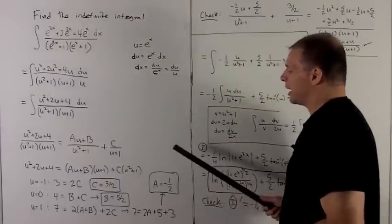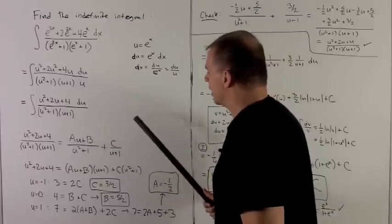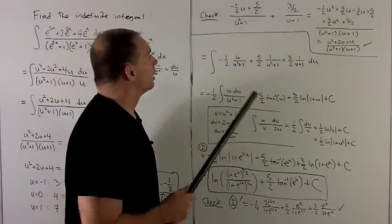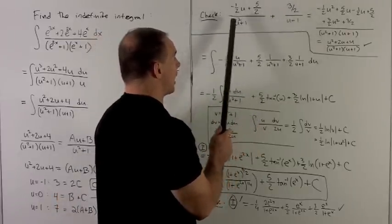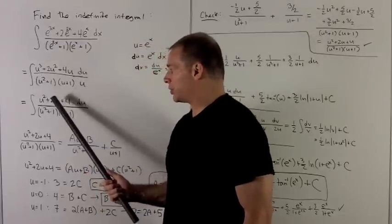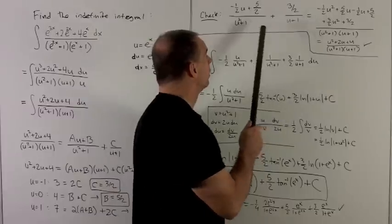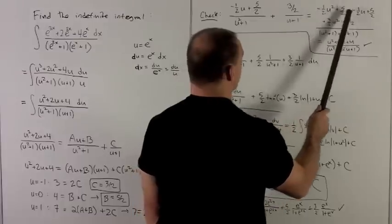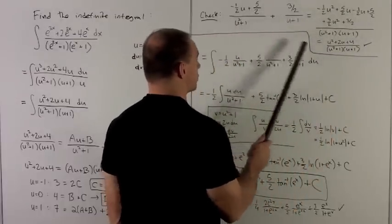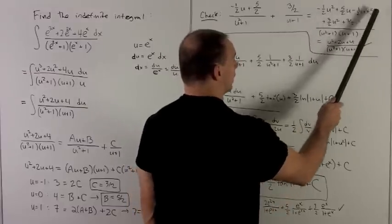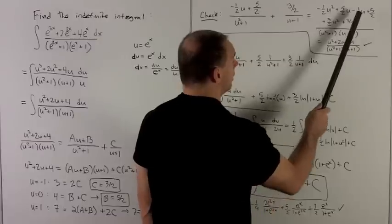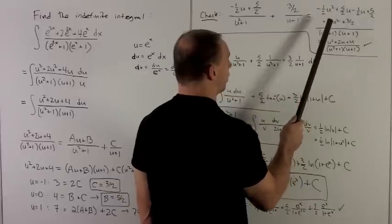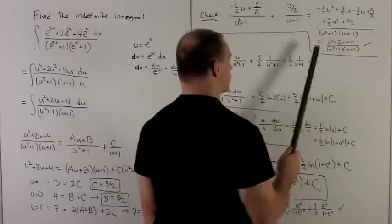Now I load all these constants back into our rational functions. Before doing the integral, I check to make sure this makes sense. Getting everything over a common denominator to verify we recover u squared plus 2u plus 4: multiplying by u plus 1 gives these four terms up top; multiplying 3 halves by u squared plus 1 gives two more terms. The constant terms combine to give 4, the u terms give 2, and the squared terms give 1. So we wind up with the rational function we started with.